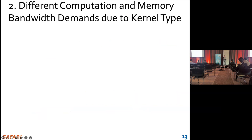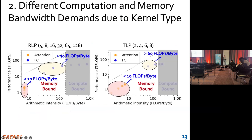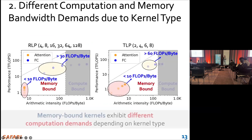Furthermore, focusing only on the memory-bound kernels: attention kernels have a very small arithmetic intensity, even smaller than 10 FLOPs/byte. But for the FC kernels, the arithmetic intensity is much larger. Therefore, memory-bound kernels exhibit different computation demands depending on the kernel type.